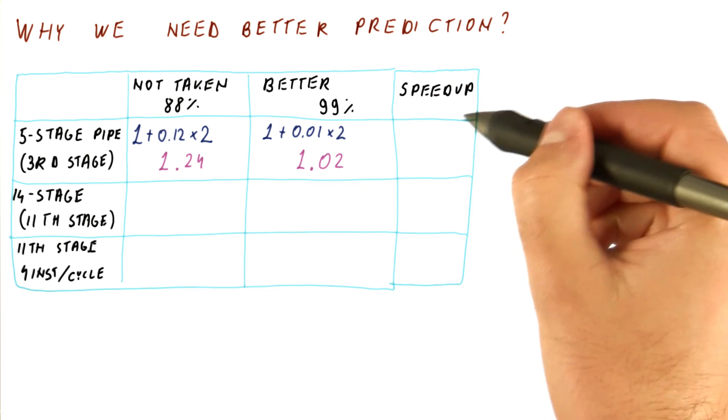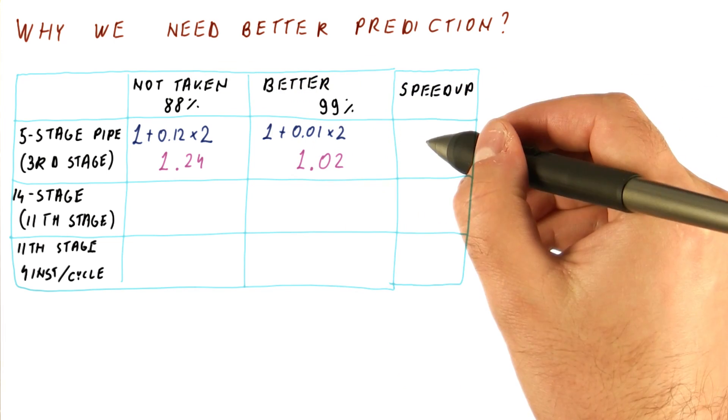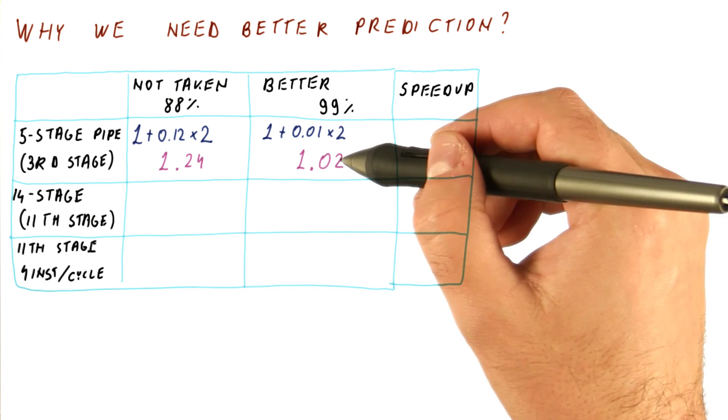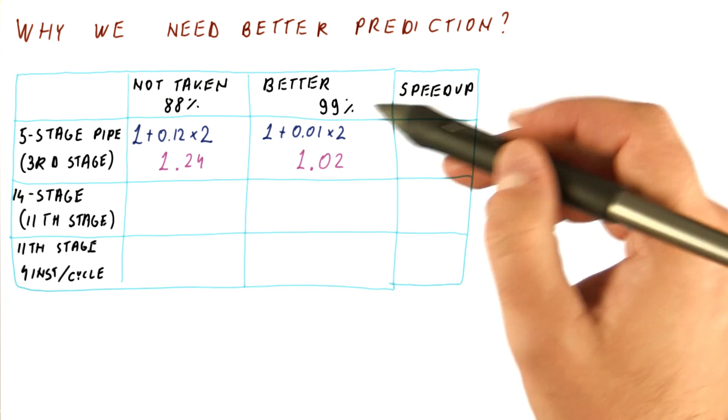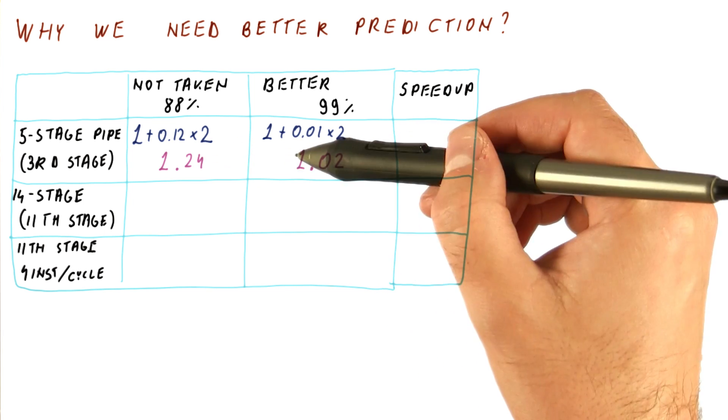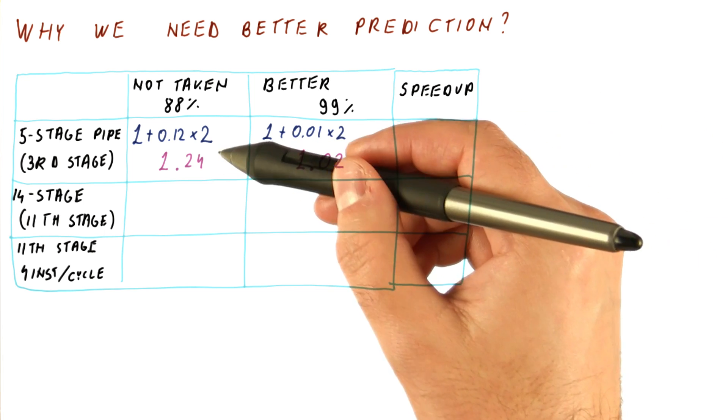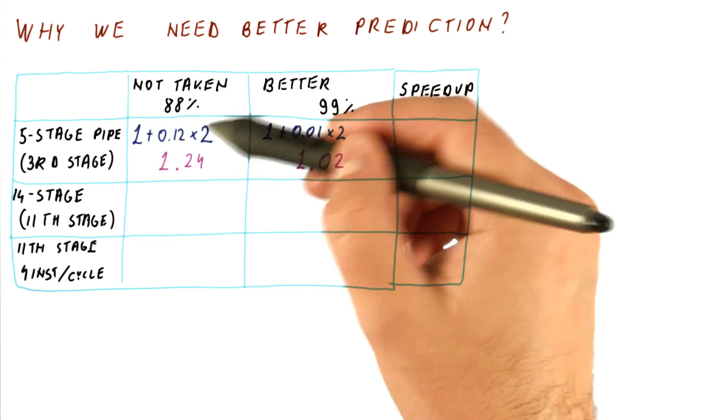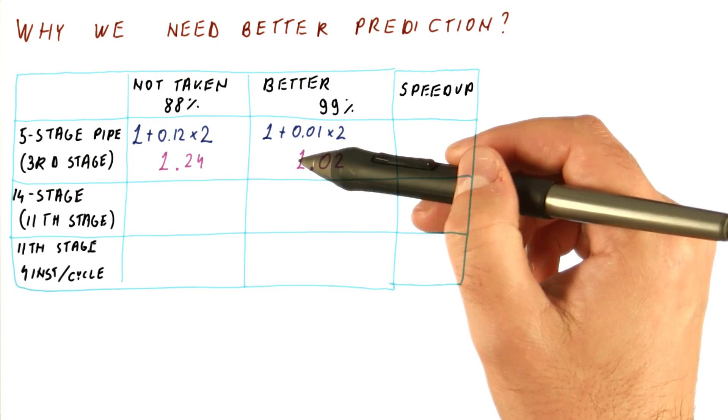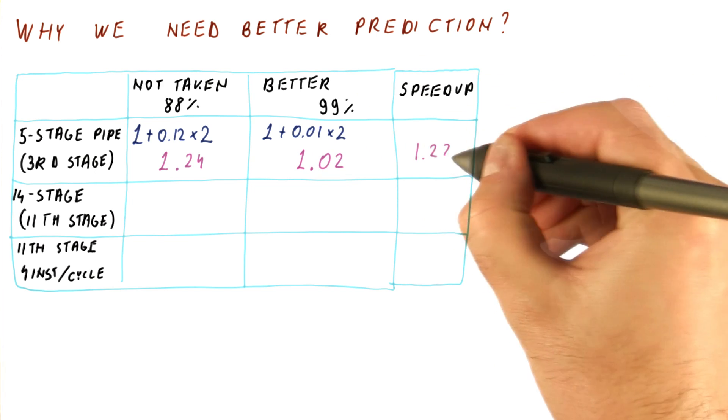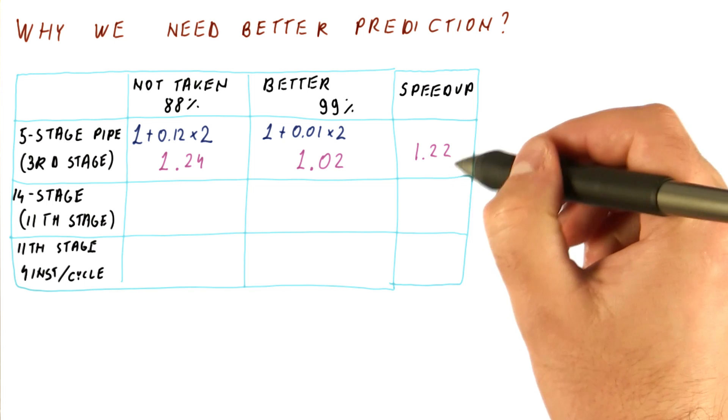And now let's look also at the speedup that we get from a better predictor. If the frequency of the processor stays the same and it executes the same number of instructions, then the speedup is simply the improvement in the CPI. So the speedup would be the CPI of the not taken predictor divided by the CPI of the better predictor, and we get a speedup of 1.22. This is actually a noticeable speedup.